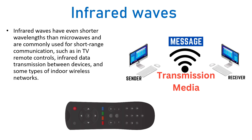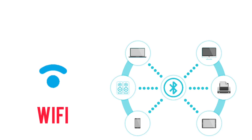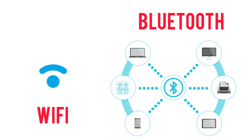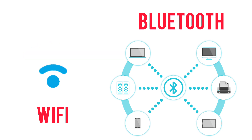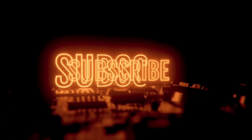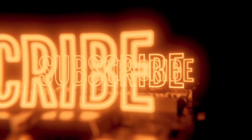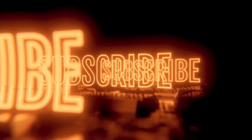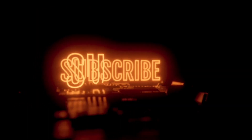Besides radio waves, microwaves, and infrared waves, there are other types of wireless transmission media such as Wi-Fi and Bluetooth, which are also used for short-range communications. This covers all about transmission media. Hopefully you have understood it — see you in the next video.